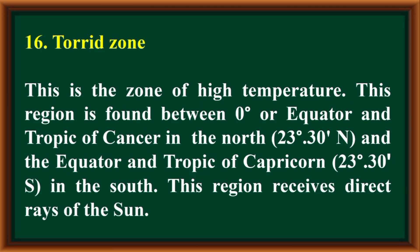Define torrid zone. This is the zone of high temperature. This region is found between 0 degrees (equator) and the Tropic of Cancer in the north, and the equator and Tropic of Capricorn in the south.